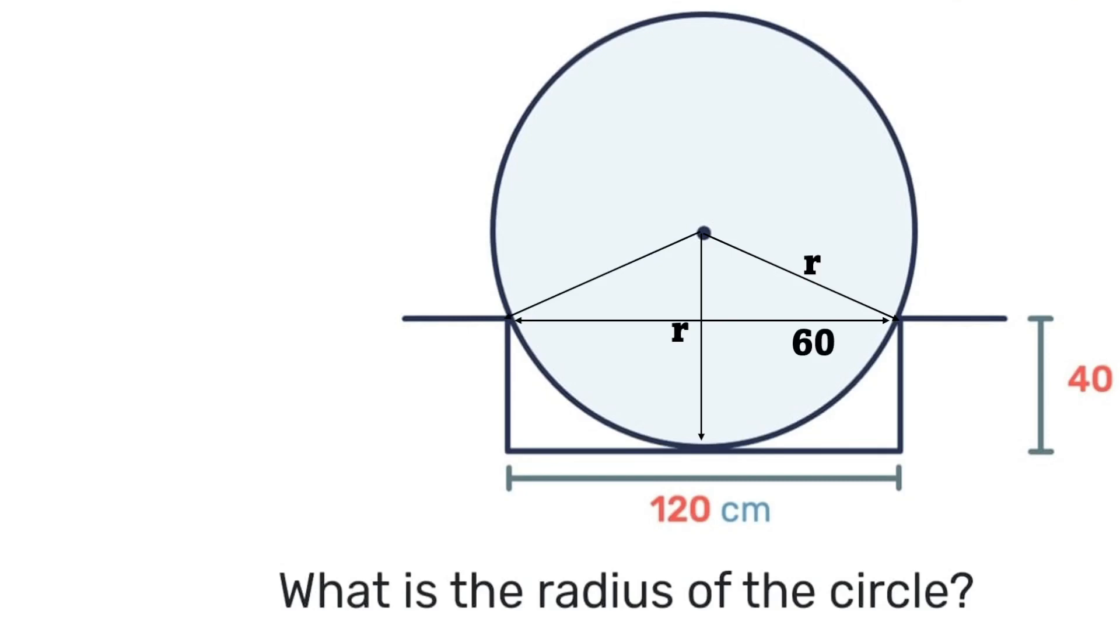Then that 40 on the right hand side will be the same as that 40 there. So that means if the radius is r and that little distance is 40, then this distance here in the right angle triangle will be r minus 40.